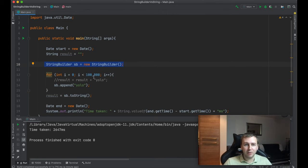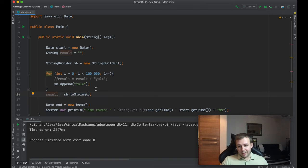After that we iterate for 100,000 times and we append the word YOLO to the string builder and in the end we just update our result value by doing result is equal to string builder dot to string. In the end our result variable will store exactly the same string as